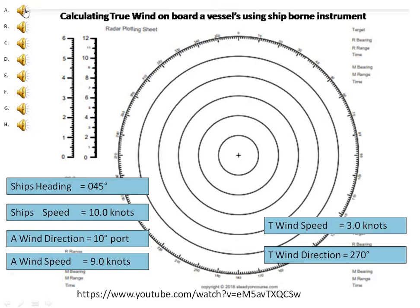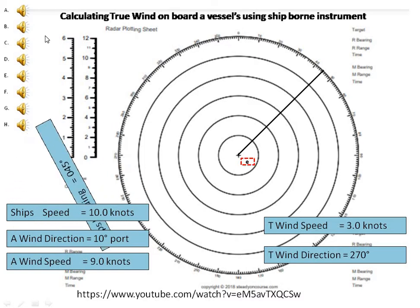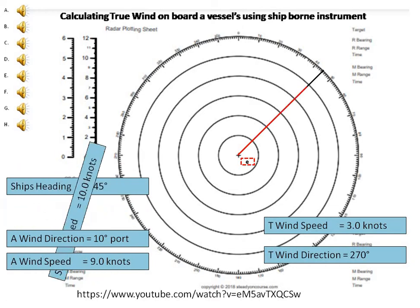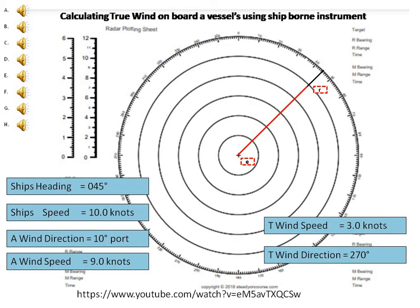Step-by-step tutorial. Step 1: Label the center of the plotting chart as E. Step 2: Plot the ship's heading or course obtained from GPS. Step 3: Plot the ship's speed measured from the scale obtained from GPS and label as R.